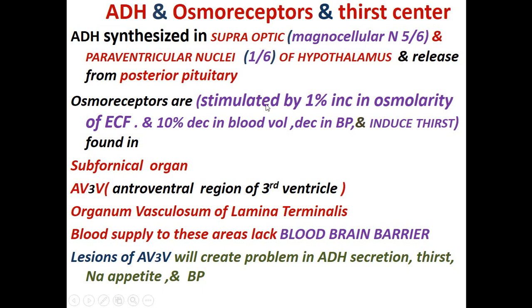ADH is synthesized in the supra-optic nucleus, specifically in the magnocellular cells present there. Quantity-wise, five-sixths of ADH is produced by the supra-optic nucleus and only one-sixth is produced by the paraventricular nucleus. So the supra-optic nucleus is mainly responsible for production of ADH. After production, it is released and moves down through the nerves to be stored in the posterior pituitary.